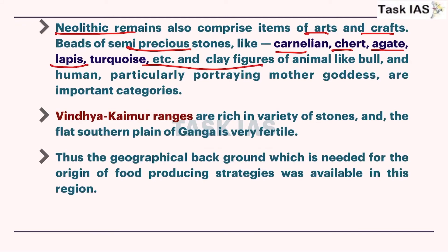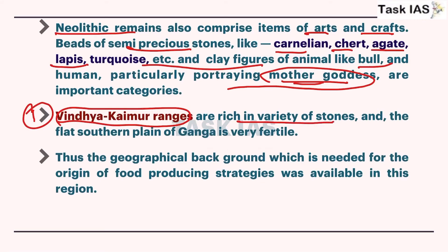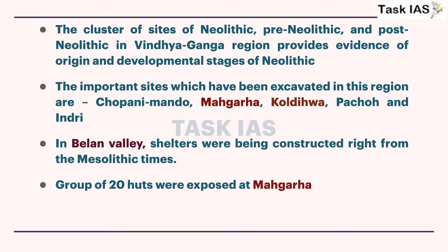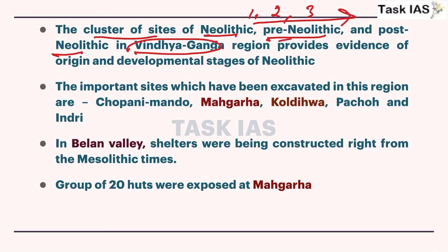The Vindhya-Kaimur range - the first region - is rich in variety of stems, and you can relate it to the alluvial region with very fertile ground for crops. The geographical background needed for food production is very well present in the Vindhya-Kaimur range, and clusters of Neolithic, pre-Neolithic, or post-Neolithic sites can be found there. Every phase has some evolutionary pattern - even Neolithic will have some division into Neolithic and pre-Neolithic, which can be easily studied in the Vindhya-Kaimur range. Important sites here are Maghra, Koldiva, Pecho, and Indri. The Belan Valley of Uttar Pradesh is also another famous site.